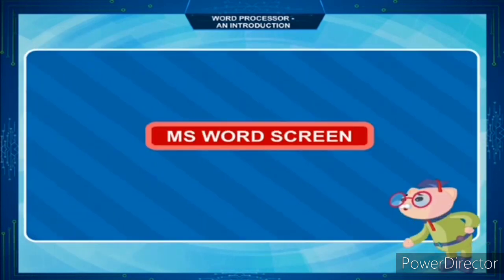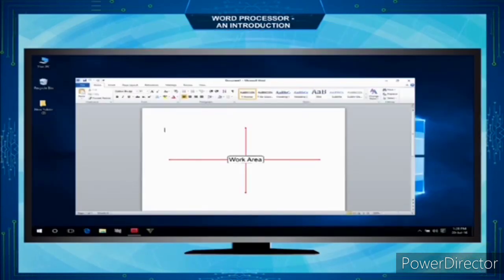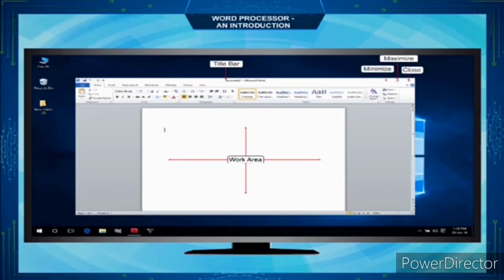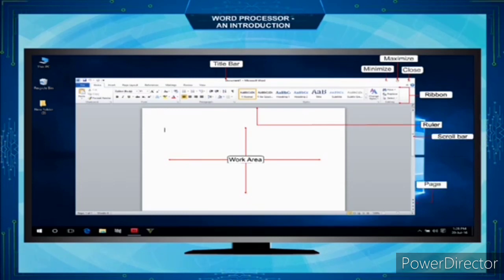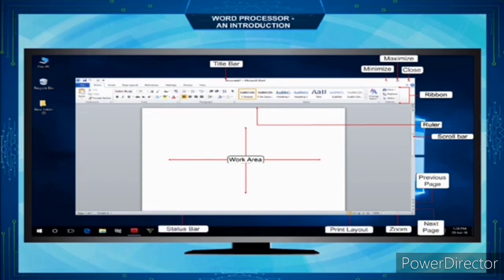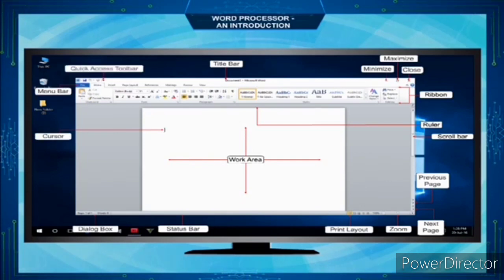The MS Word Screen: the following graphic illustrates the elements of MS Word 2010 — Title Bar, Minimize, Maximize, Close, Ribbon, Ruler, Scroll Bar, Previous Page, Next Page, Zoom, Print Layout, Status Bar, Dialog Box, Cursor, Menu Bar, and Quick Access Toolbar.